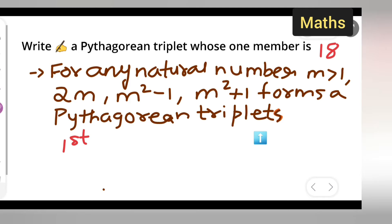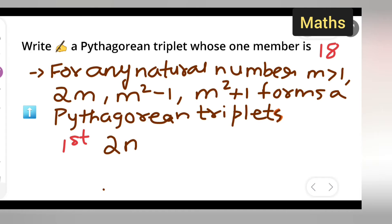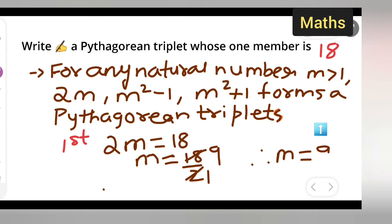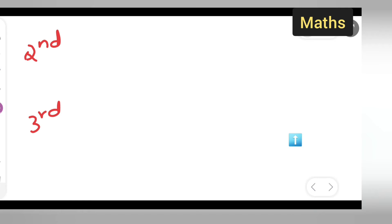The first part of the triplet is 2m. We set 2m equal to 18, because one member is 18. Solving for m: m = 18/2, so m = 9.